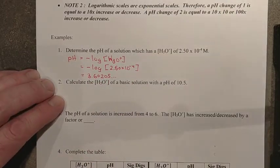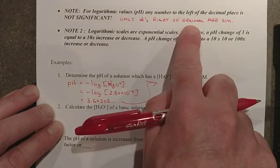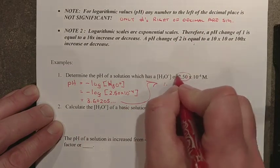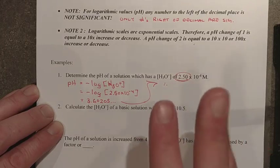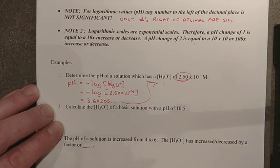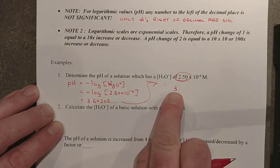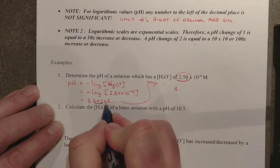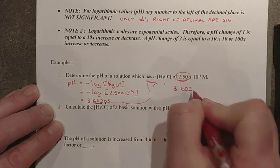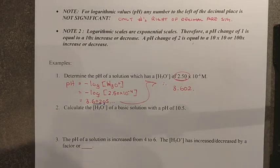We just have to finish that off with significant digits. Numbers to the right of the decimal place are the only significant digits in a pH value. In the original value 2.50, there are 3 significant digits, so we need three digits to the right of the decimal. Therefore, the answer is 3.602. Keep practicing, guys.